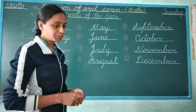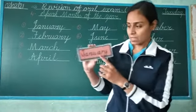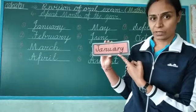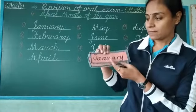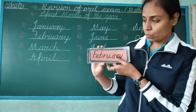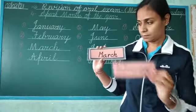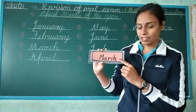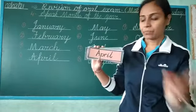Now I will show you the flashcard of the months. Which month is this? This is January. Then which month comes after? Which month is this? This is February. Then which month comes? March.